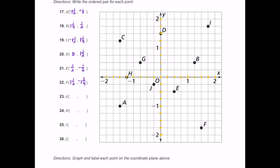For G, located in quadrant two. Start at the origin and move three quarters to the left — so negative three quarters — and then move positive one half up. So the ordered pair is negative three fourths comma positive one half.